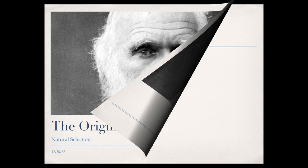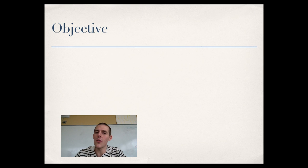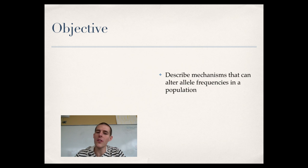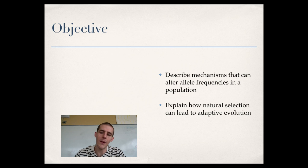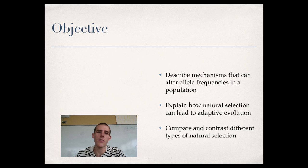So by the end of the video, here are the things that I need you to know or to be able to do. First, describe mechanisms that can alter allele frequencies in a population. Explain how natural selection can lead to adaptive evolution. And finally, compare and contrast different types of natural selection.